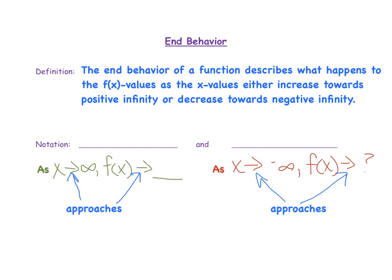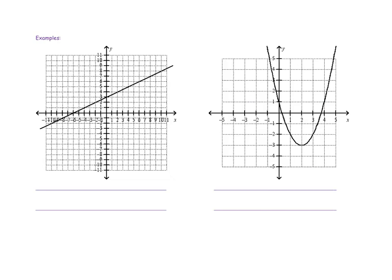Now let's look at some actual examples of graphs. In our first example, we have a linear graph. To write our first end behavior statement, we look at this graph: when x is increasing in a positive direction, towards positive infinity, the y values or f of x values are also increasing. As you move positively towards the right, you're also moving upward. So we write: as x approaches positive infinity, f of x approaches positive infinity.